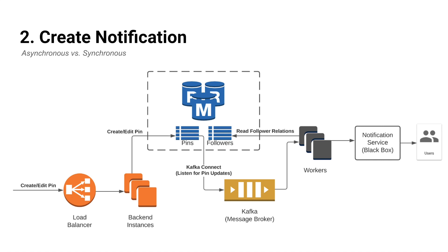One approach to implement asynchronous notification is to register a trigger on the pins table, listen for any updates, and publish update messages to a message broker like Kafka. We can use something like Kafka Connect to set things up. An alternative is to explicitly publish a message to Kafka on the user request before sending the success response. Then we can create workers that subscribe to this topic and create notifications whenever there are messages. Before creating a notification, workers would look up the followers table to retrieve the list of users following the updated pin.